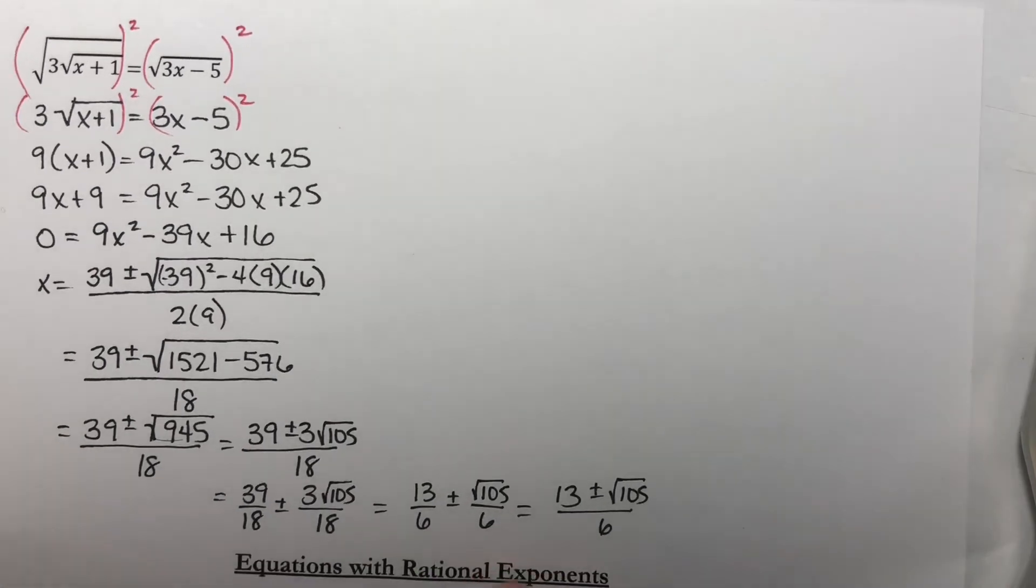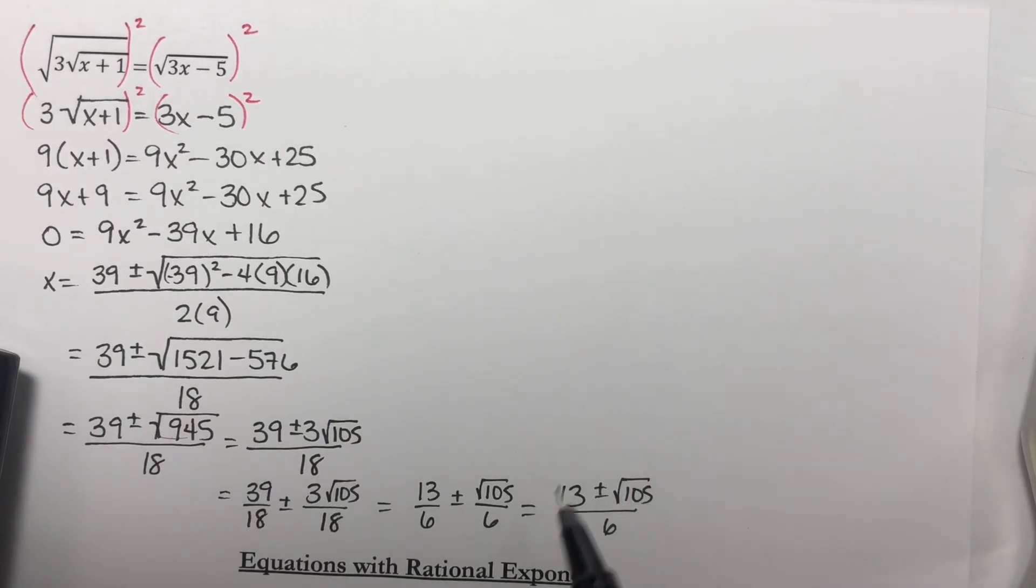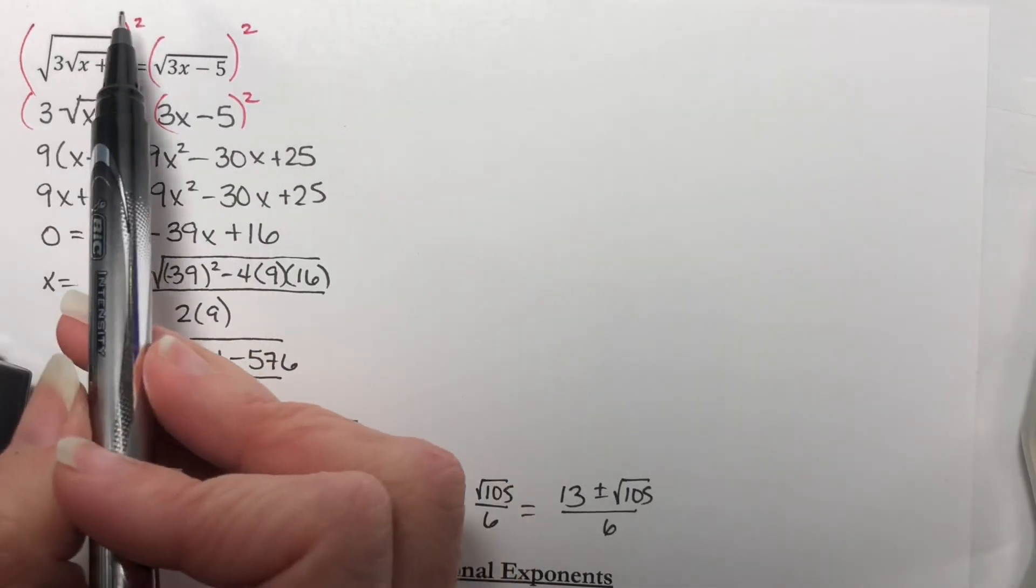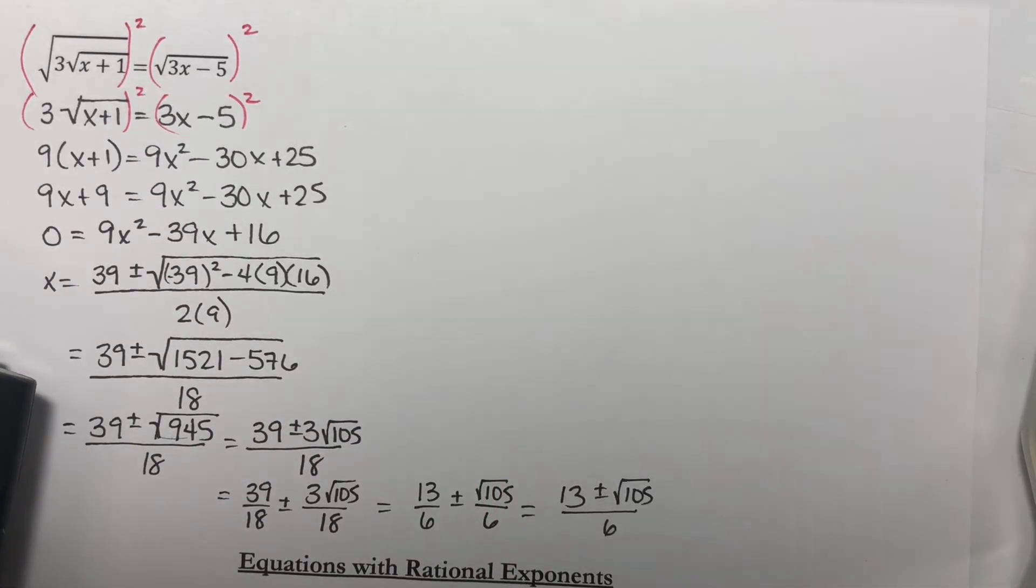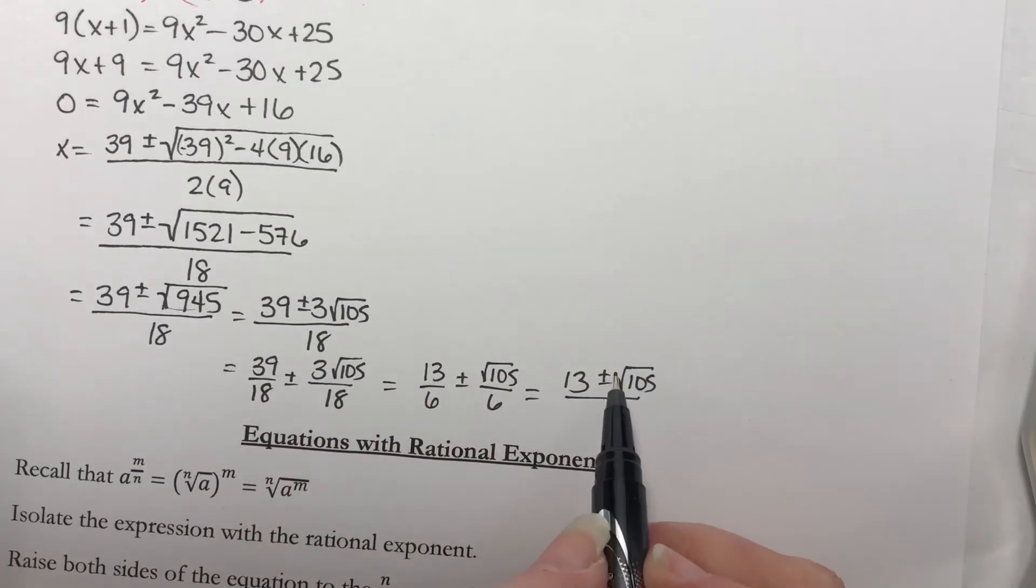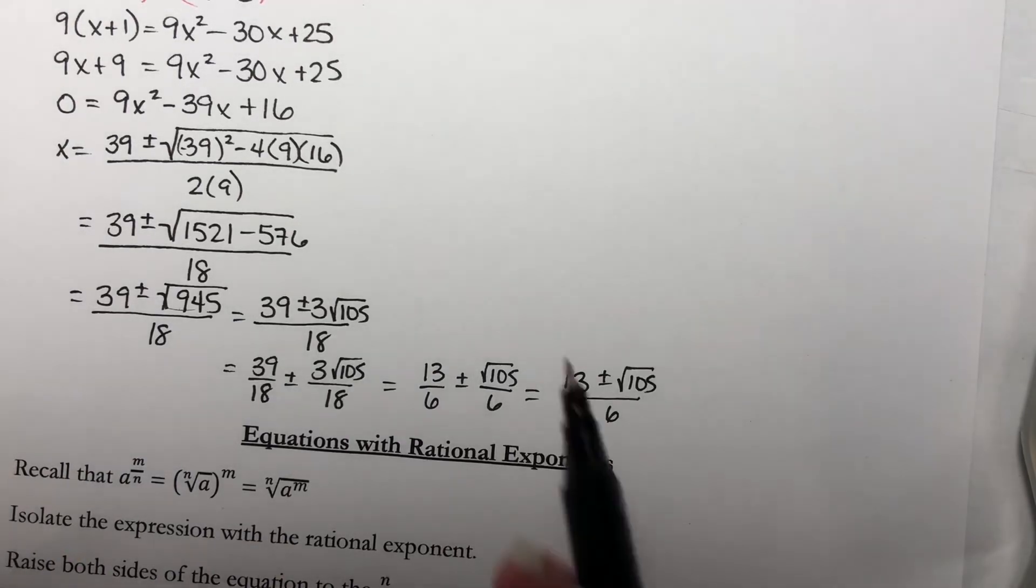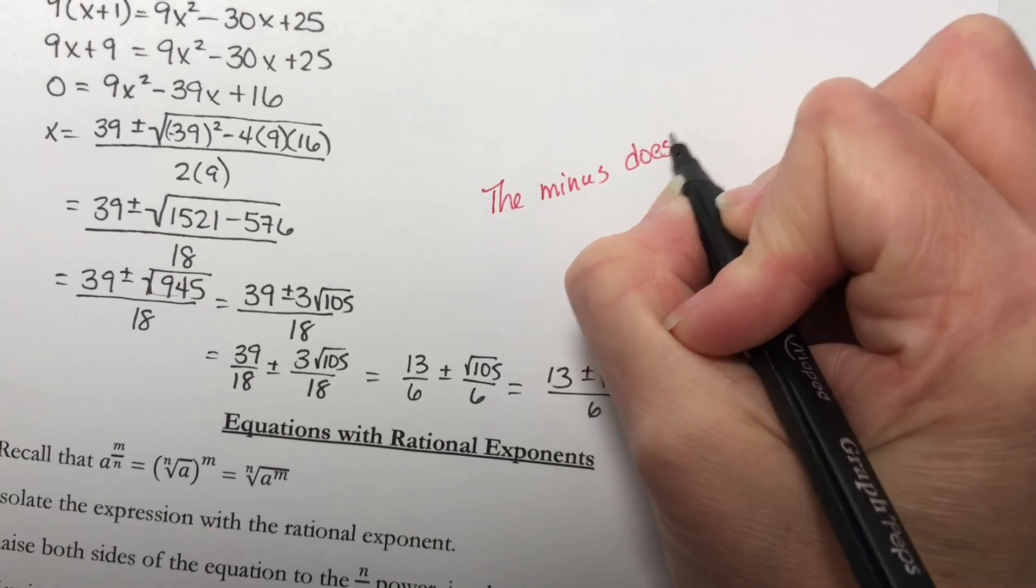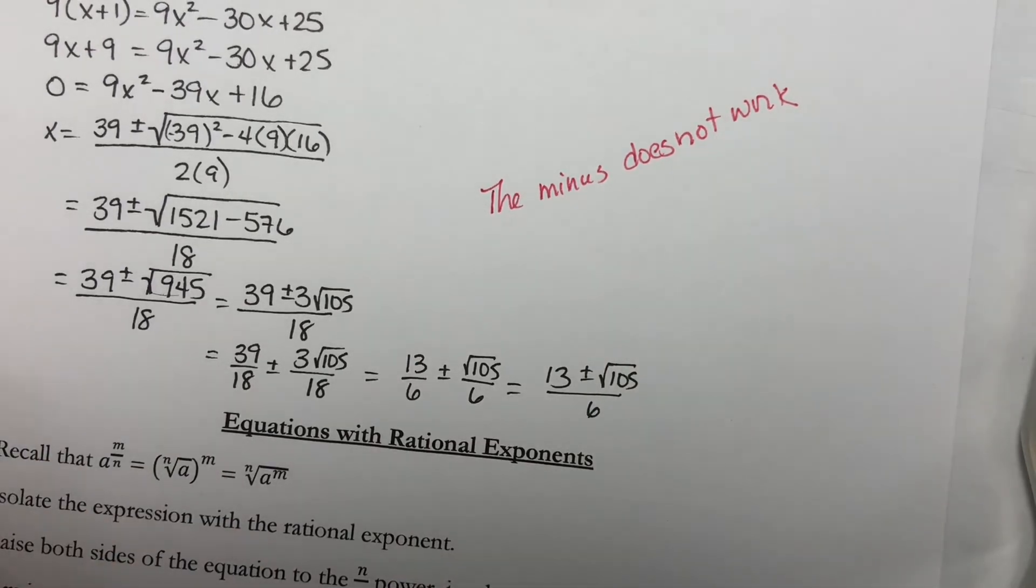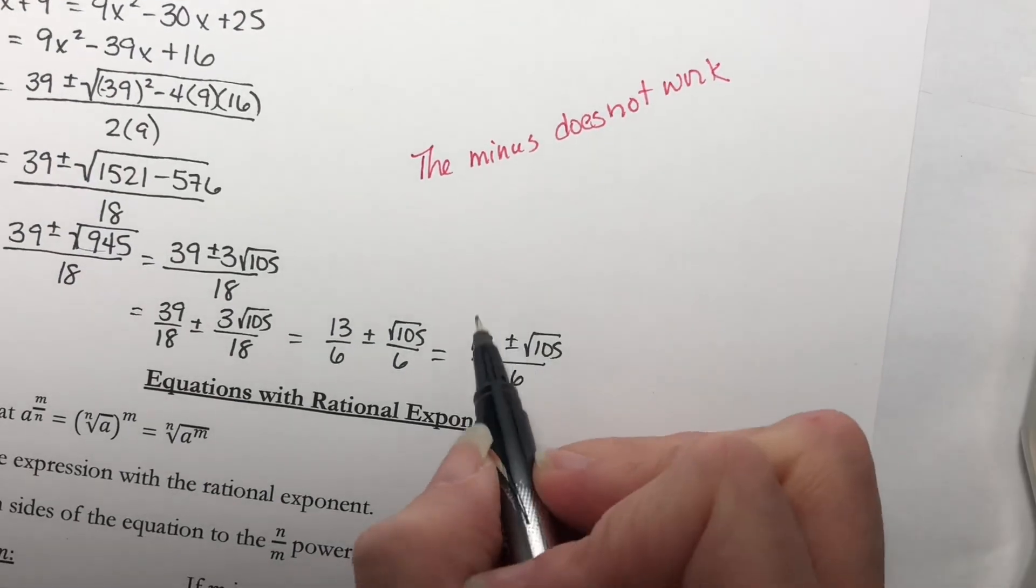Now we do need to check these answers. I'm going to strongly suggest that you use your calculator for these. You can plug this into your calculator and get a decimal approximation, and then check it with a decimal approximation. Now you won't get exactly the same thing on both sides because you're using an approximation, which is by definition an error. So anytime you have even the slightest error, you won't get the same thing on both sides, but you should be able to check to see that they are practically the same. They're going to be very close to being the same. Now when you do that, you have two answers here. You have the plus version and you have the minus version. When you use your calculator, you'll find that the minus one doesn't work. So you'll have to throw that one out. Your answer here is going to be only the plus version.